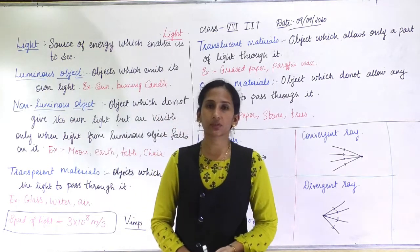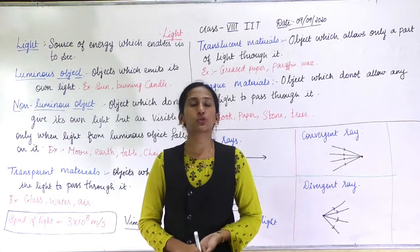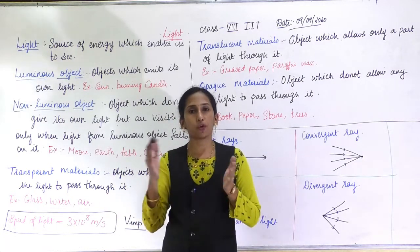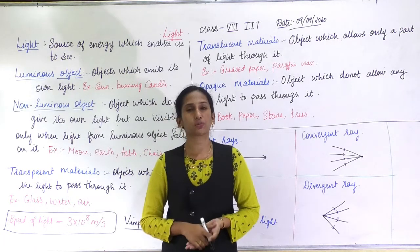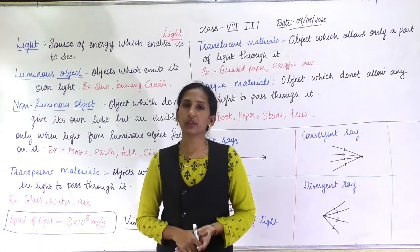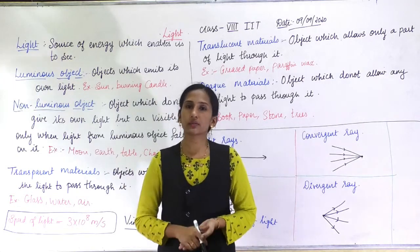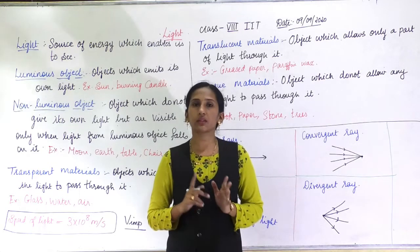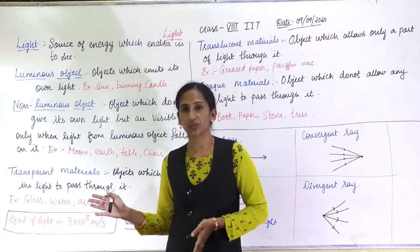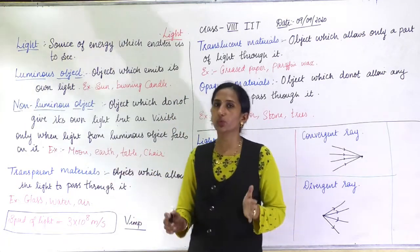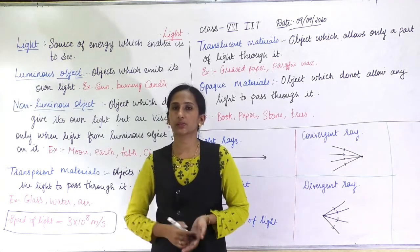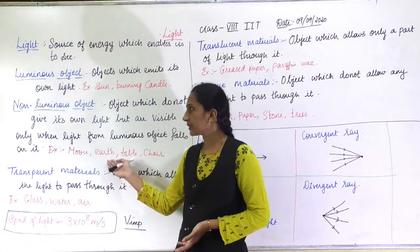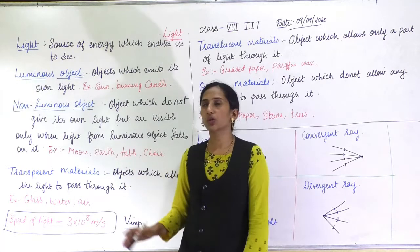Non-luminous objects are objects which do not emit their own light but are still visible to us. They are visible because light from a luminous object falls on them and reflects to our eyes. For example, in this room you can see the board because light falls on it and reflects back to your eyes. The moon and the earth are non-luminous objects — the sun's light reflects off the moon back to us. Tables, chairs, and all everyday objects are also non-luminous objects.